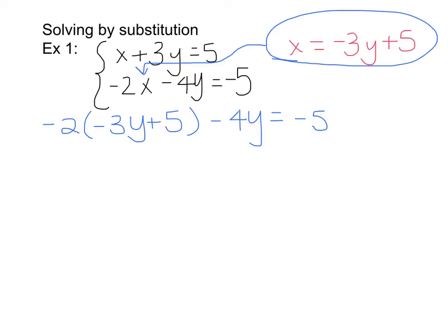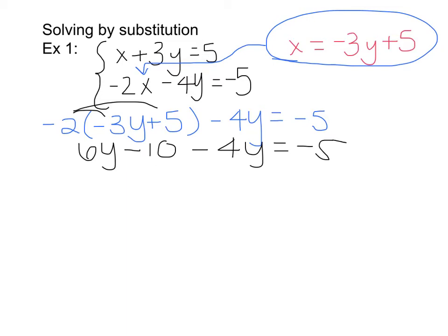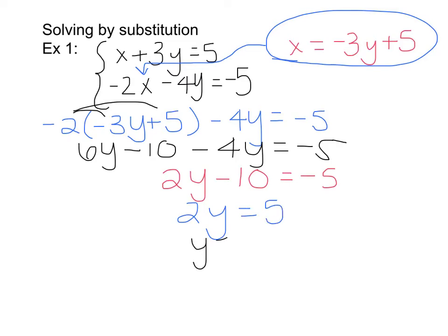We are going to start by distributing our negative 2. Negative 2 times negative 3 gives me positive 6y. Negative 2 times positive 5 gives me negative 10, and then bring down your negative 4y equals negative 5. Combining like terms: 6y minus 4y gives me 2y minus 10 equals negative 5. Add 10 to the other side, giving 2y equals 5. Divide by 2 and y equals 5 halves.